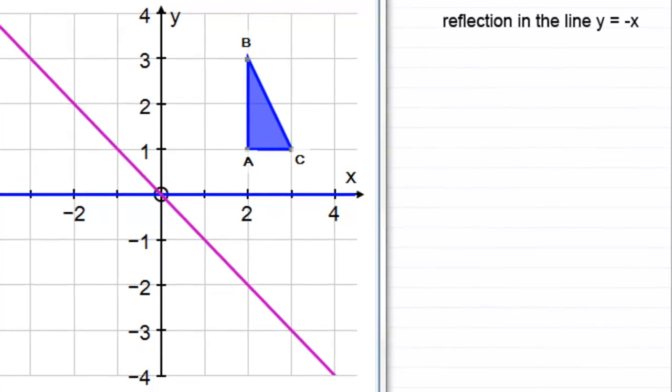Hi, welcome to another video in my series on matrix transformations. In this video we're going to look at the matrix that represents a reflection in the line y equals minus x, and I've got a shape to demonstrate this, this triangle here ABC.